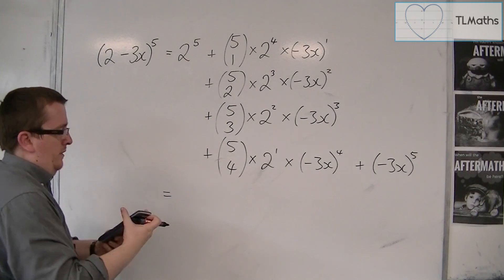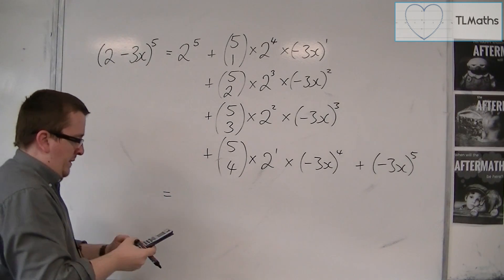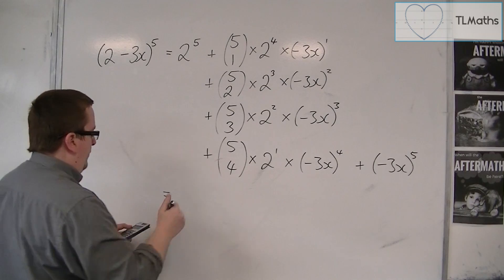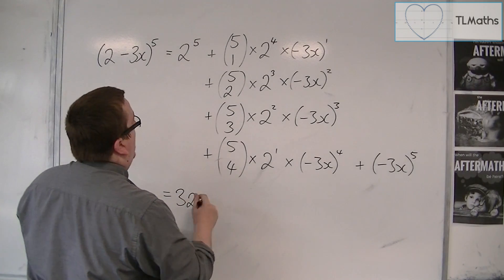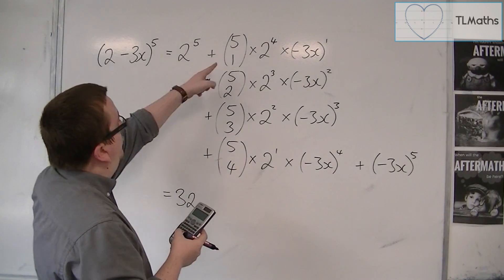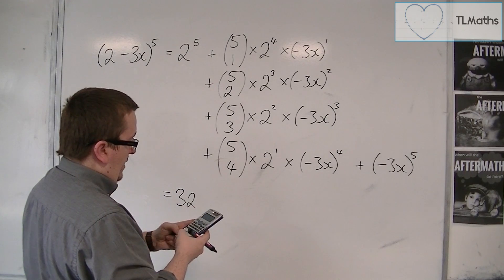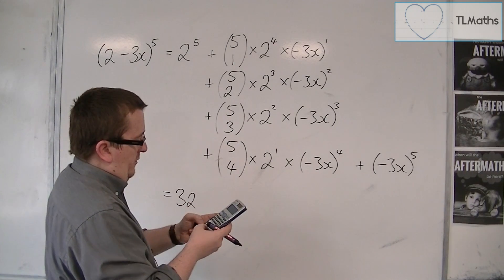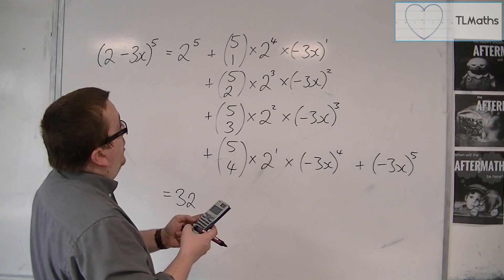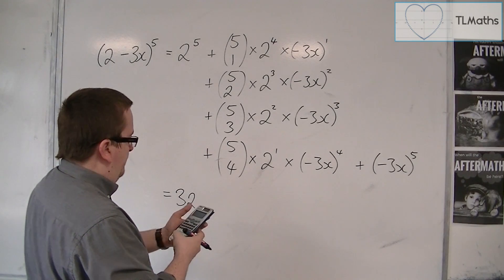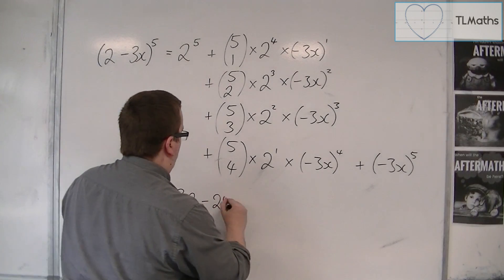And so we have, popping this into the calculator, 2 to the power of 5, so 32, then we have 5 choose 1, so 5 ncr 1, times by 2 to the 4, times by minus 3, and that gets me minus 240, so that's minus 240x.